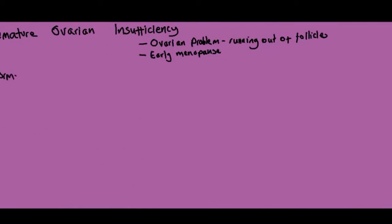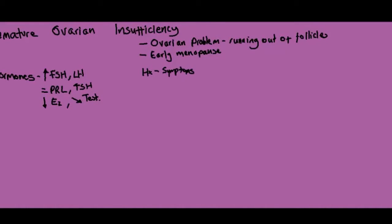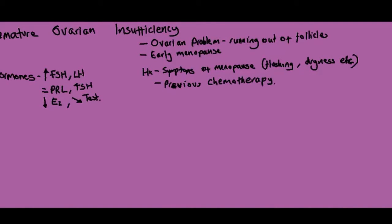Condition number three is premature ovarian insufficiency — essentially premature menopause. It's an ovarian problem where the follicles have run out. Hormone results show increased FSH and LH, because low oestrogen isn't providing feedback to the hypothalamus. FSH and LH are high, oestrogen is low, testosterone is slightly reduced but adrenals are compensating, and prolactin and TSH are both normal. In the history, women will have menopausal symptoms such as hot flushes and night sweats.